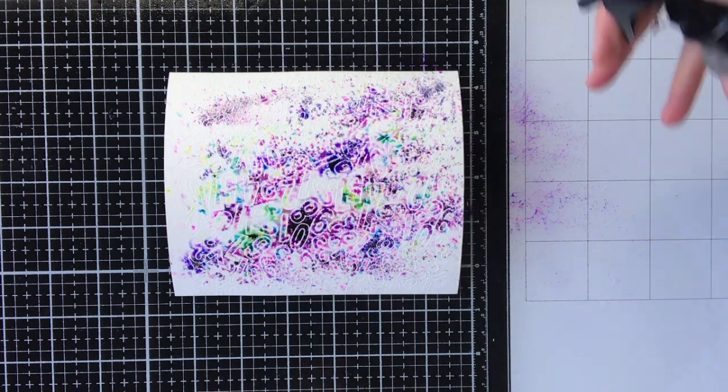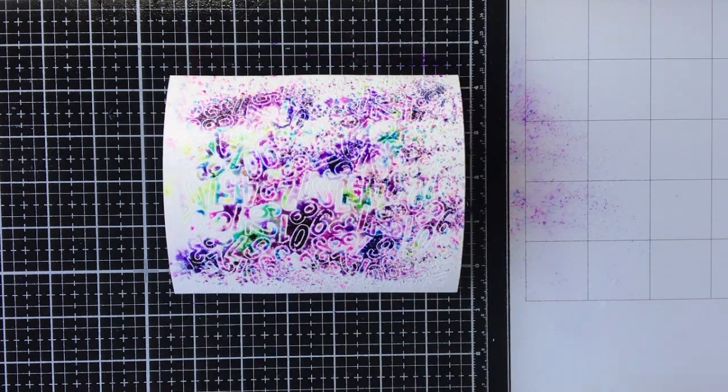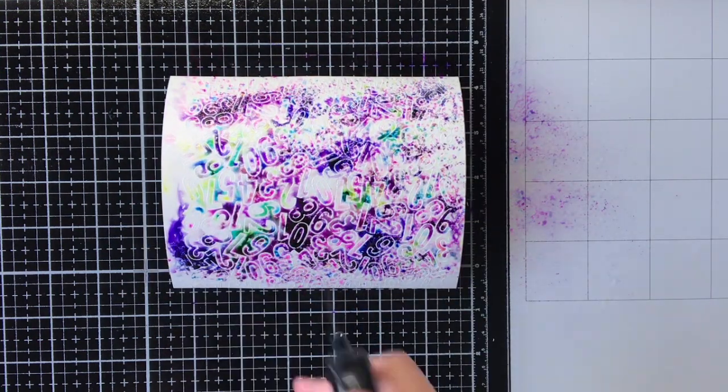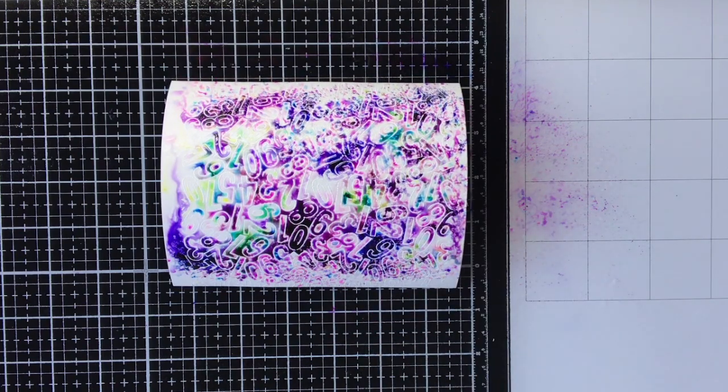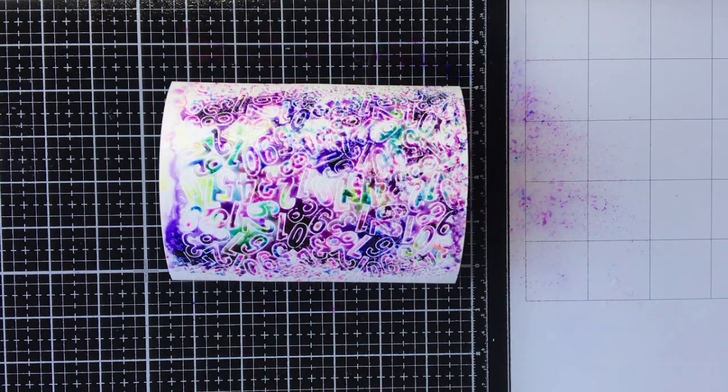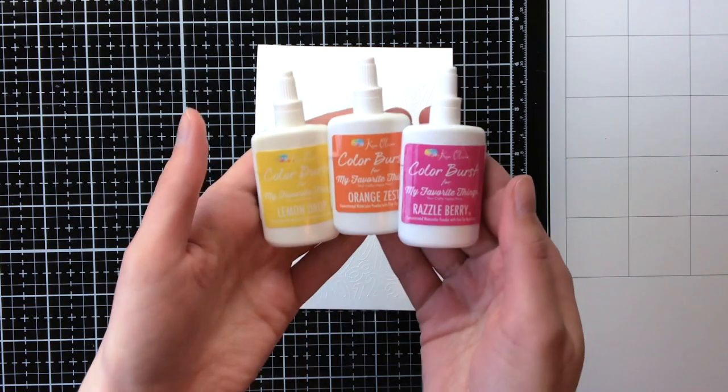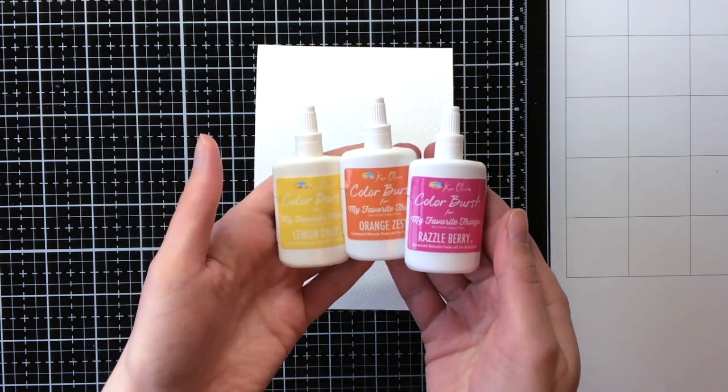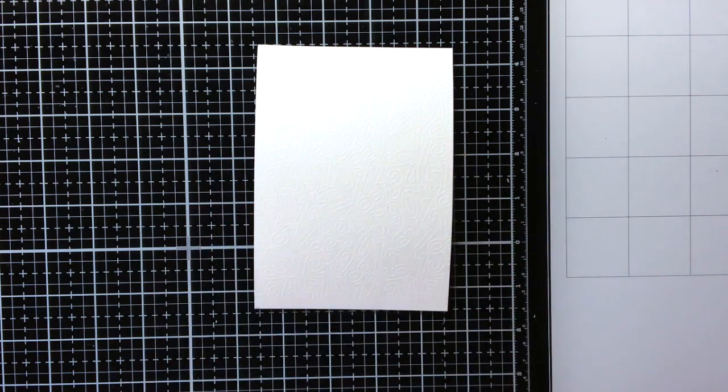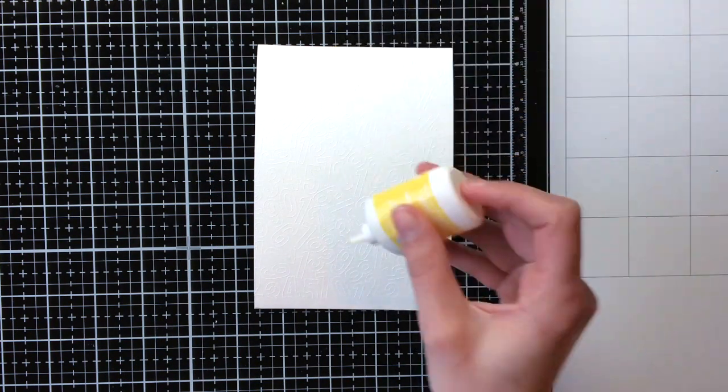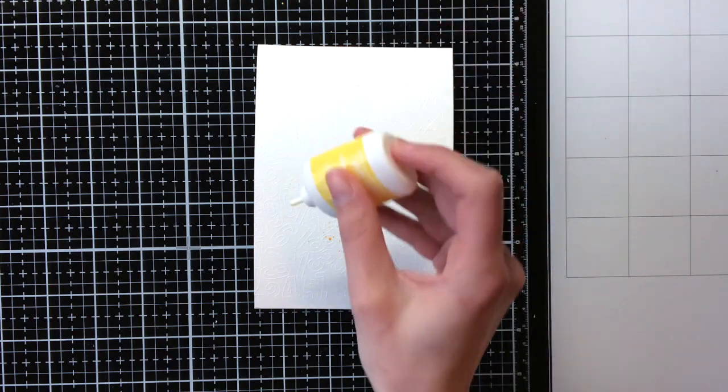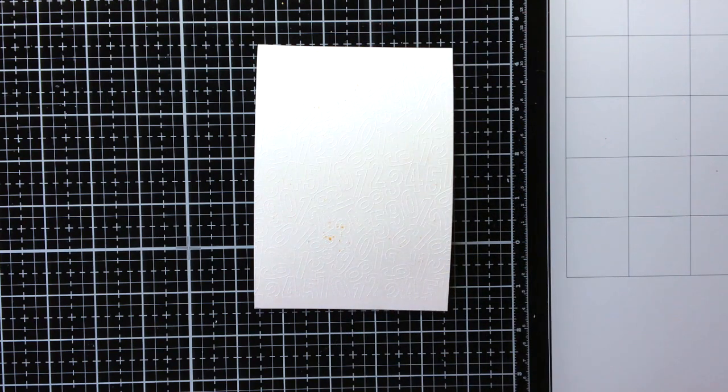After applying the powder, I'm again using my distress sprayer to get a mist of water and activate the powder. You can see what a beautiful result this is already having. As I mentioned before, you just need to set the background aside to dry and not touch it. At the start it can look like a hot mess, but trust me, the background will dry up beautifully.